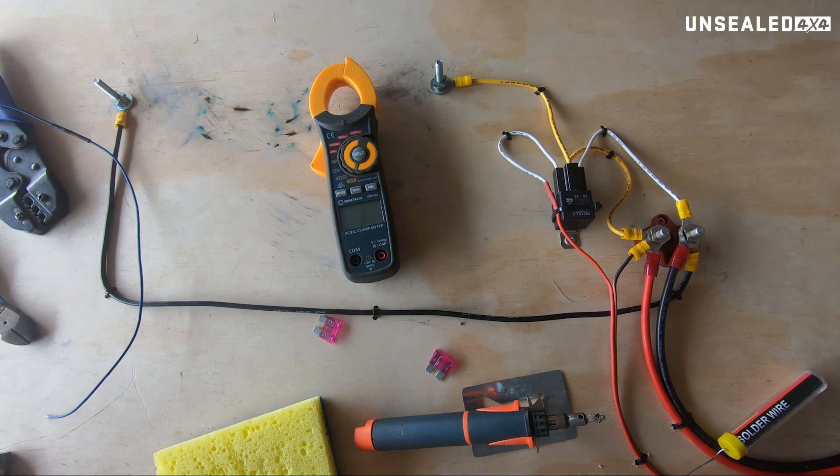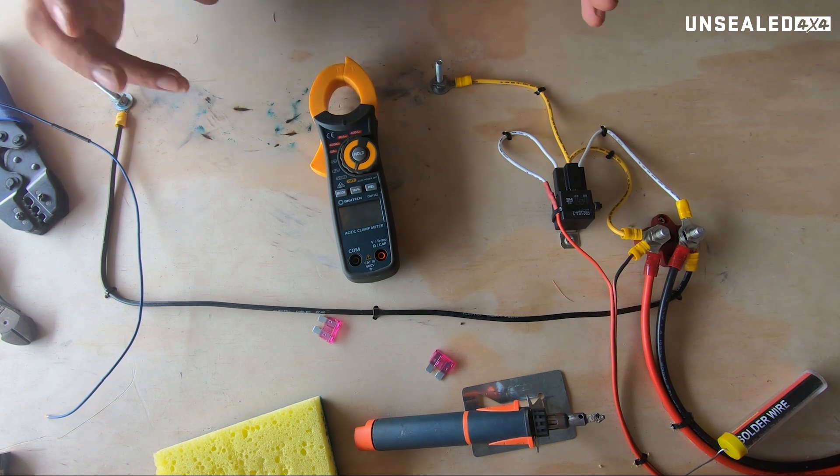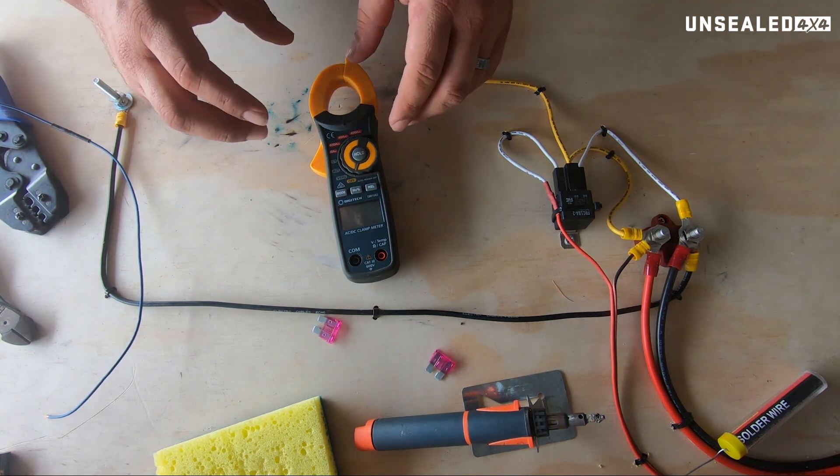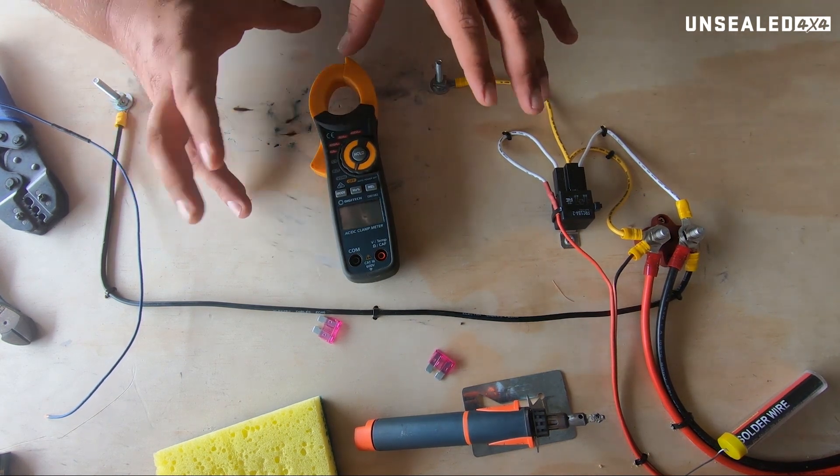This is my personal favorite guys, this is the clamp meter. Really simple to use, really cool little bit of kit. Now as you probably have seen in the multimeter one, you can do similar things with a multimeter that you can do with this. This just makes life a little bit easier.